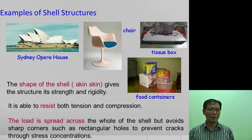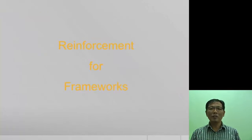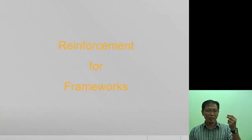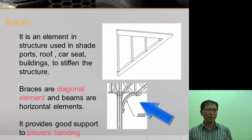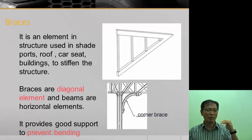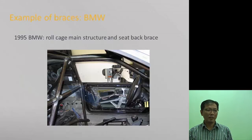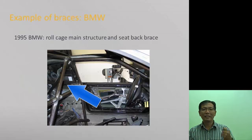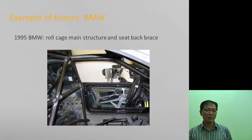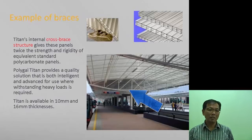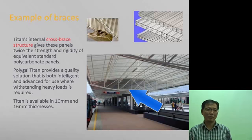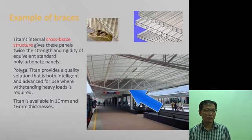For reinforcement in frameworks, we have something called a brace — a corner or diagonal member that joins the horizontal and the vertical to prevent bending. For example, in cars there are seat braces at the back to protect the body shell from collapsing. In the MRT, you can see braces joining up the roof.